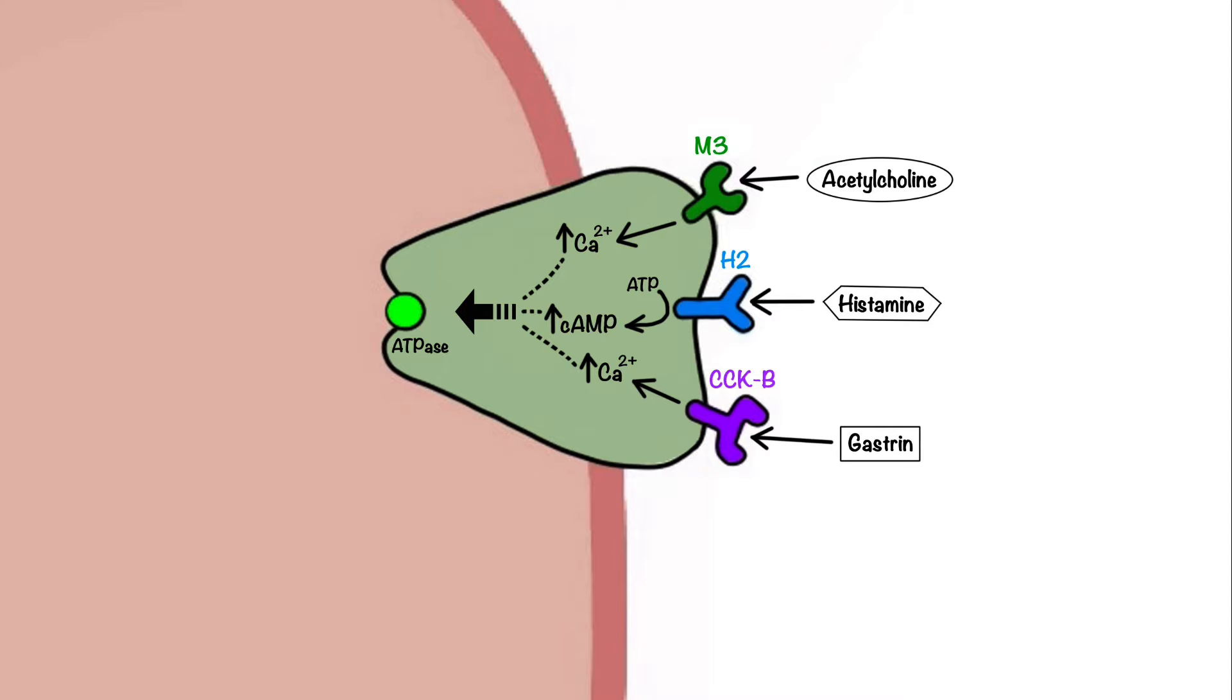The proton pump is the terminal stage in gastric acid secretion, being directly responsible for the active transport of hydrogen ions out of the cell in exchange for potassium ions. Chloride ions are also secreted from parietal cells into the lumen by simple diffusion.